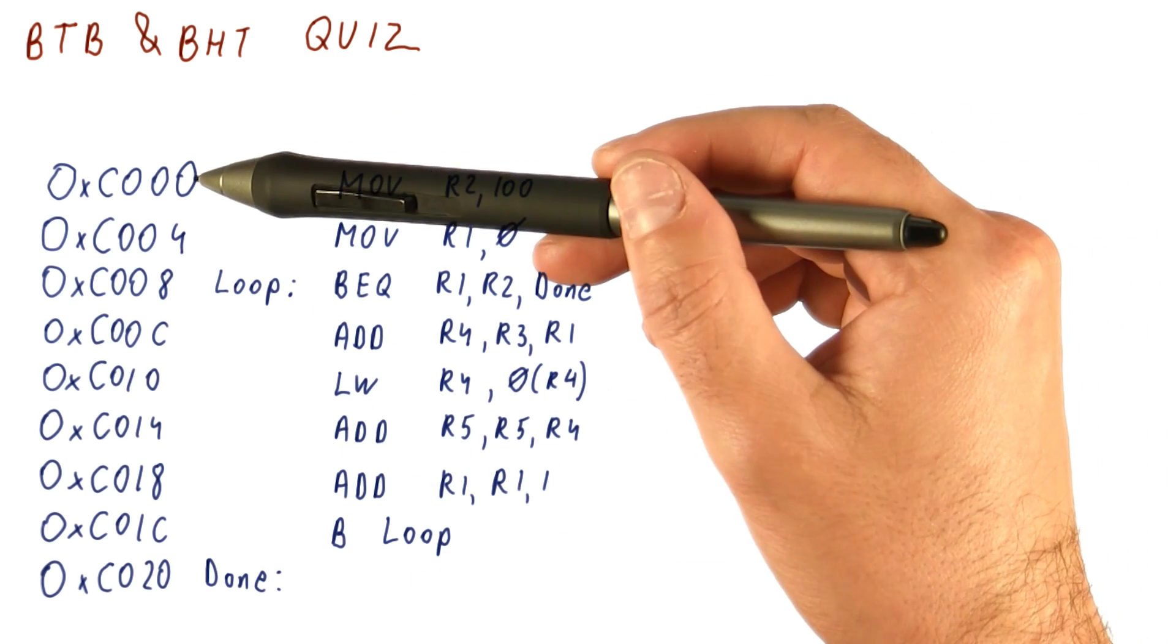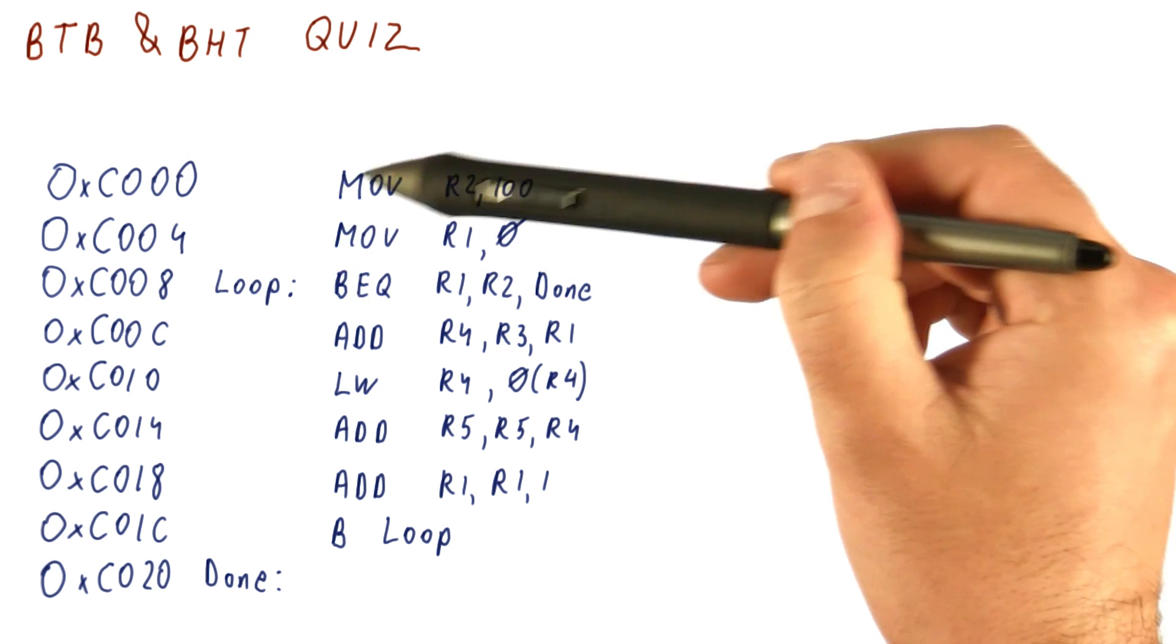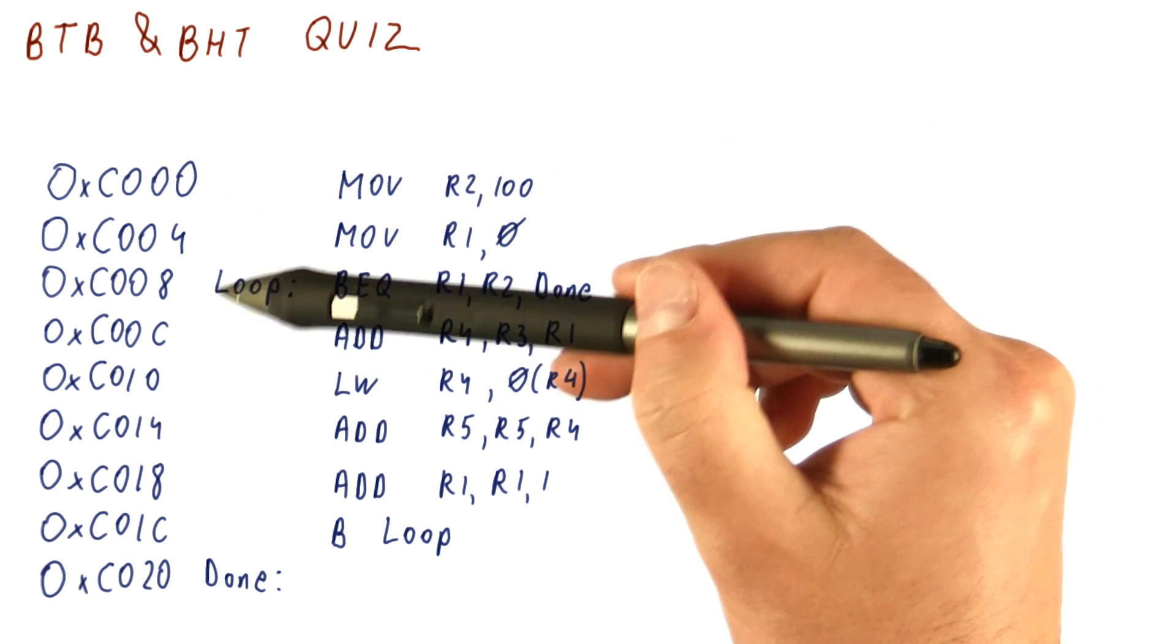Suppose we have the following program. This is the address of the instruction. This is the instruction itself. And these are the labels for branches.